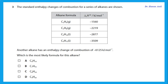Question three: the standard enthalpy changes of combustion for a series of alkanes are shown. Another alkane has enthalpy change of combustion of minus 6125 — which is the most likely formula? We look at the differences: from C2 to C3 is about 660, C3 to C4 is about 660, C4 to C5 is about 630. For 6125, we have a difference of 2616 from C5, and each additional carbon adds about 630. So we are adding about 4 carbons to C5, giving C9H20.